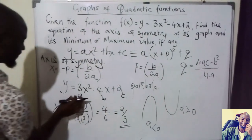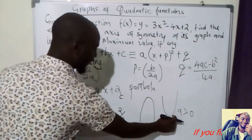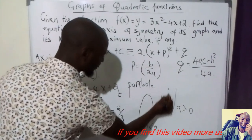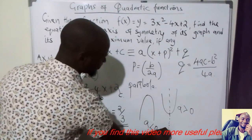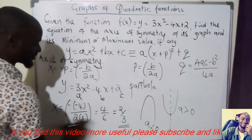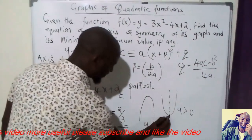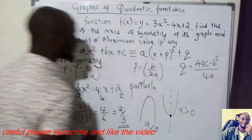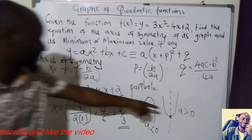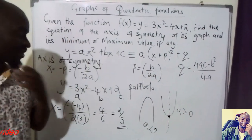Coming back to our equation, a is positive, so we are having a smile — the parabola opens upward. The axis of symmetry occurs at the turning point, which is at x equals 2/3. This point is the turning point, and we have to identify whether it is a maximum or minimum. Since a is greater than 0, it is a minimum turning point.